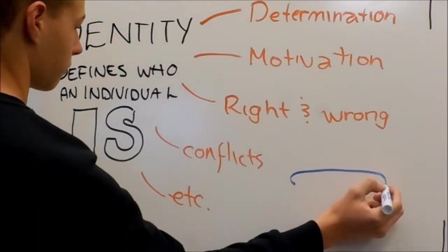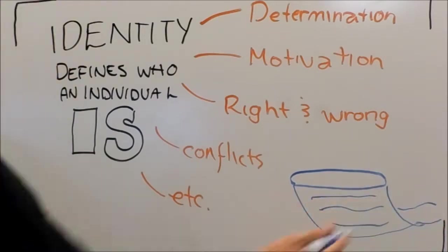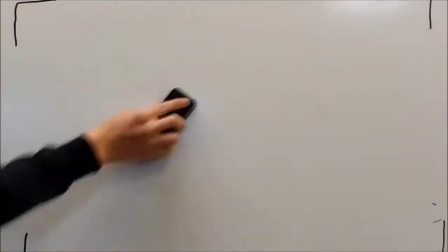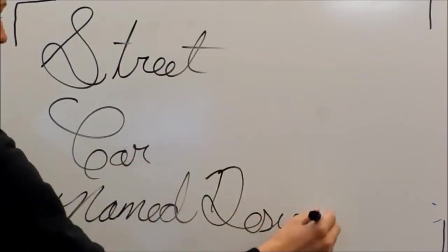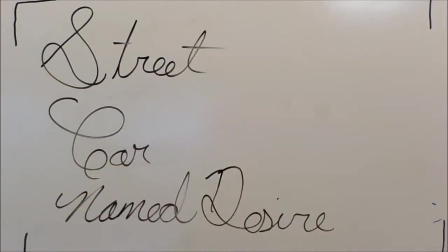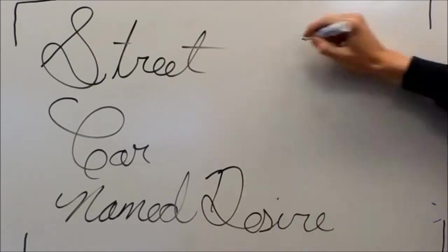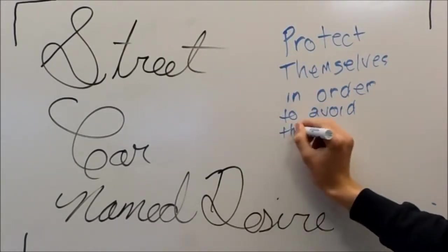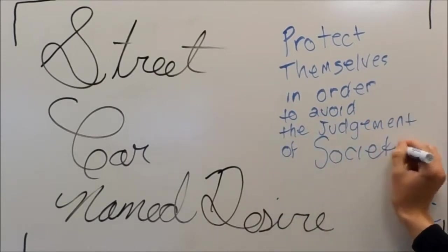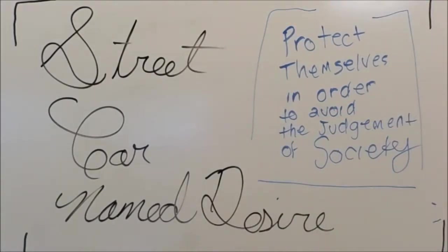In the play A Streetcar Named Desire by Tennessee Williams, personal characteristics and conflicts constantly define each character's specific identity. It is clear when an individual is motivated by past insecurities, he or she often chooses to create illusions to protect themselves in order to avoid the judgment of society and the truth of their own identity.